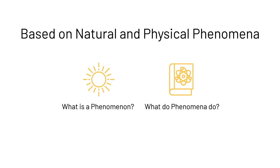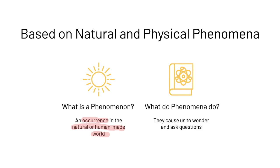Theories are based on natural and physical phenomena. So what is a phenomenon? A phenomenon is an occurrence made in the natural or human-made world — so basically anything that happens. And what do phenomena do? They cause us to wonder and ask questions. Anything we see in the natural or human-made world that causes us to wonder what happens and makes us ask questions — what is that? How does it happen?